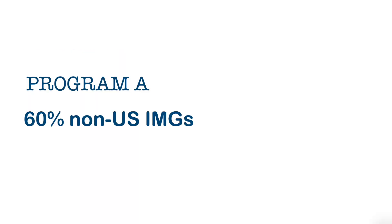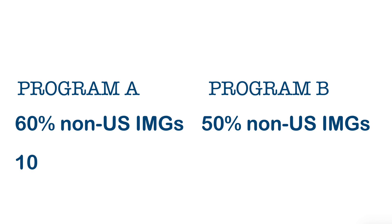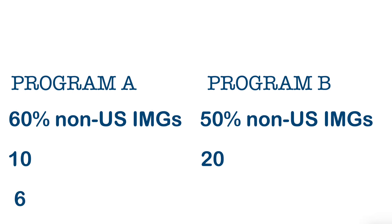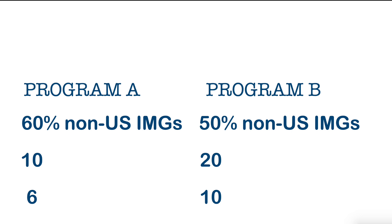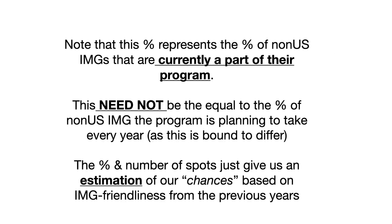One mistake you should avoid is thinking that if a program has a high percentage of non-US IMGs, you have a higher chance of getting in. Let me explain: say Program A has 60% non-US IMGs and Program B has 50%, but Program A has just 10 spots and Program B has 20. Program A will take only 6 non-US IMGs while Program B will take about 10. So Program B actually gives you a higher chance of getting a spot — keep that in mind.